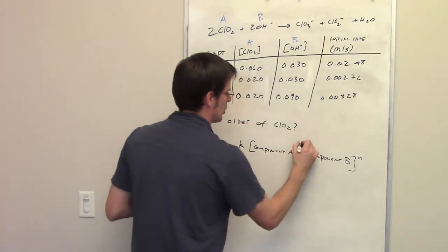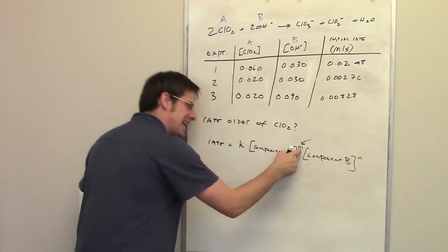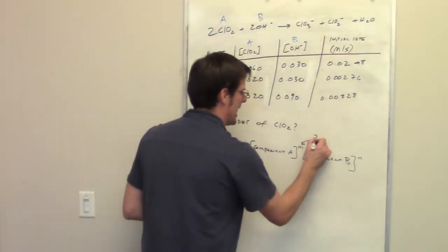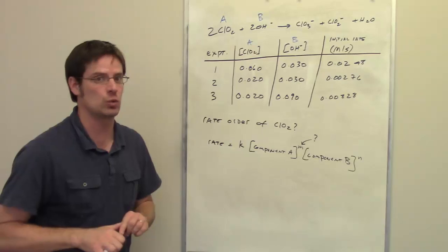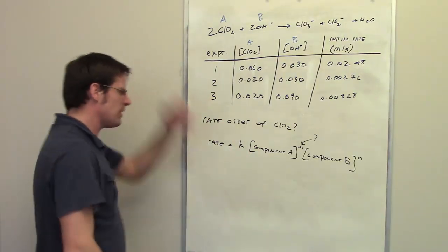So what we're really trying to determine, if we're calling the chlorine dioxide component A, we're trying to figure out what M is. How in the world do you figure out what M is? M, by the way, is the reaction rate order with respect to component A, chlorine dioxide.